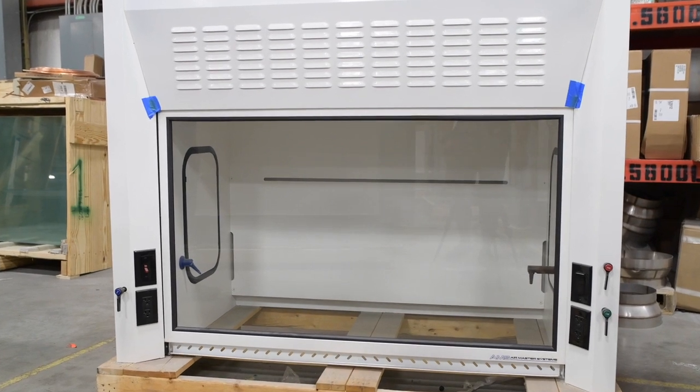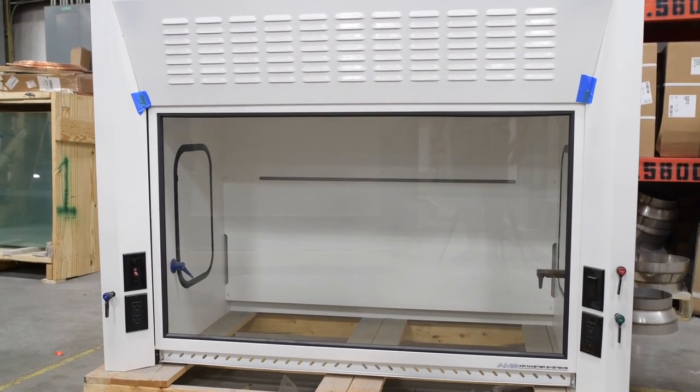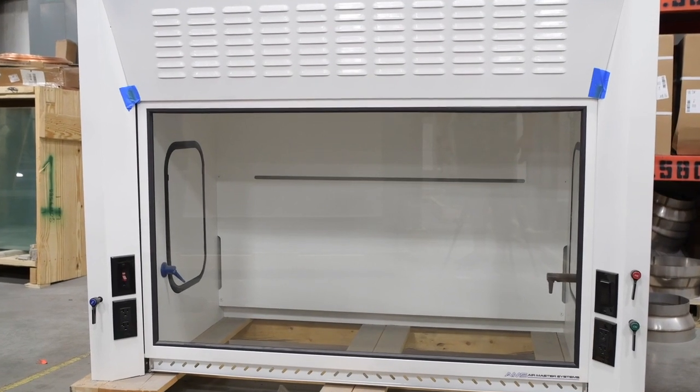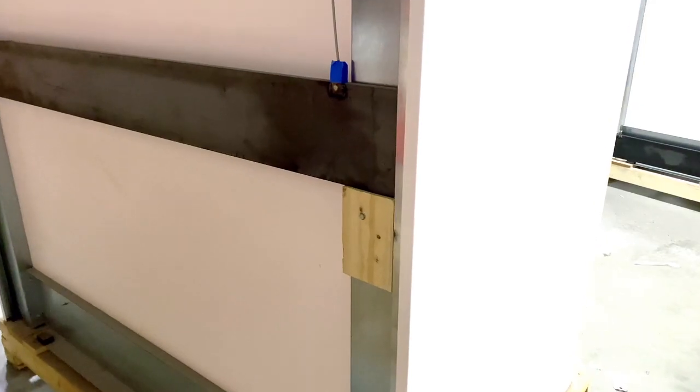To replace the sash glass on an eliminator hood, all you have to do is work from the front. If you have a solution series hood, you will need to remove the top panel first.